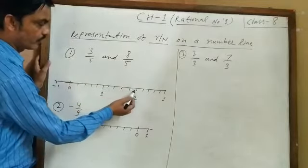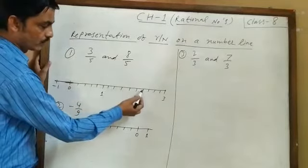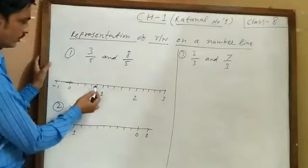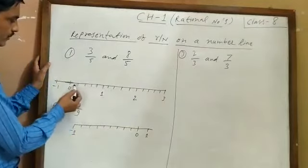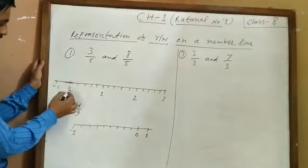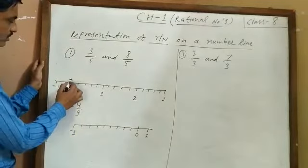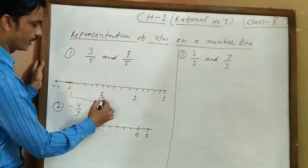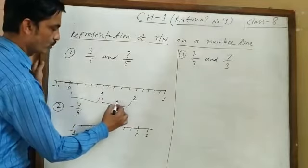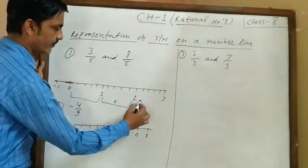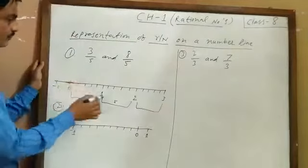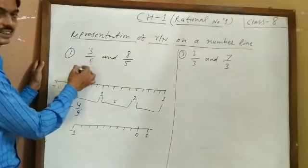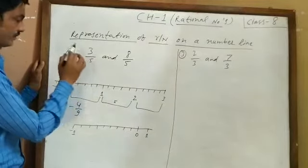We count 1, 2, 3, 4, 5 for the first unit; then 1, 2, 3, 4, 5 for the next unit; and 1, 2, 3, 4, 5 for the unit after that. Each part is divided into 5 equal parts because the denominator is 5.